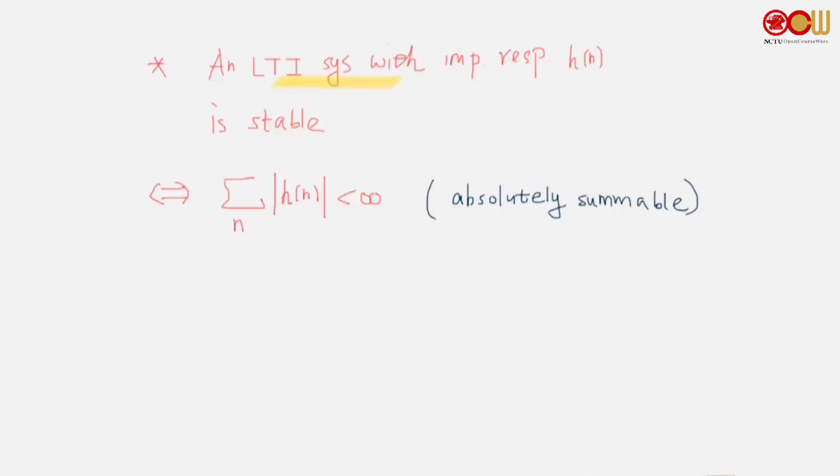Combining the two results that we have just found, we can say that an LTI system with impulse response h is stable if and only if it's absolutely summable.